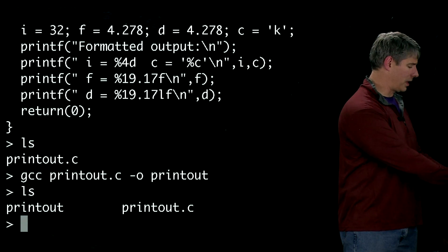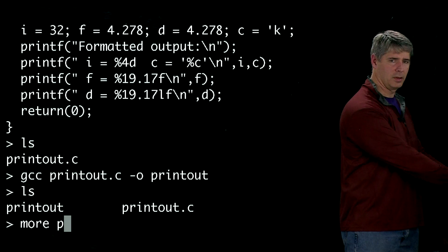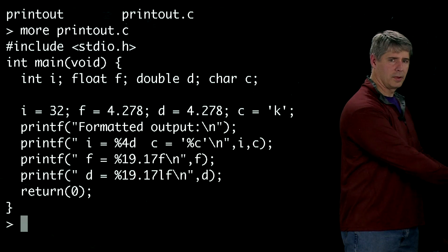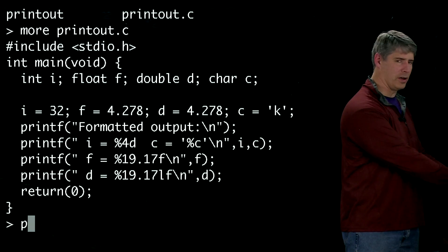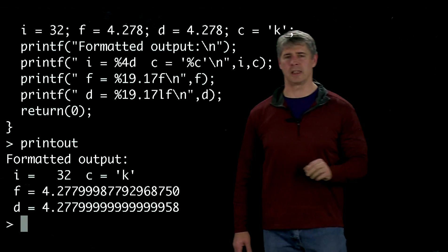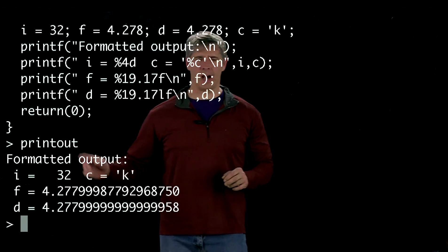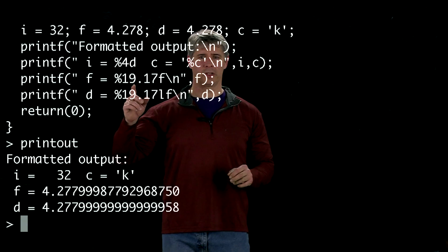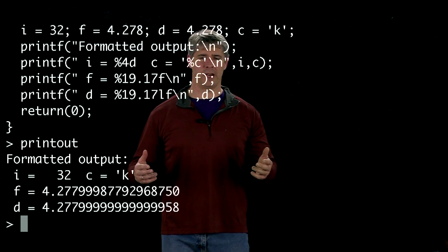And now, just so we have it on the screen, I'm going to list the program one more time, and now I'll run it. And this is the output. You see that i is equal to 32, just as we would expect. C is equal to k, just as we would expect.